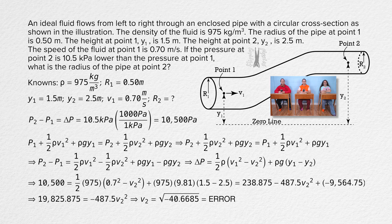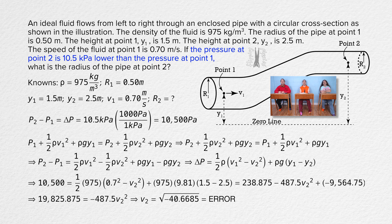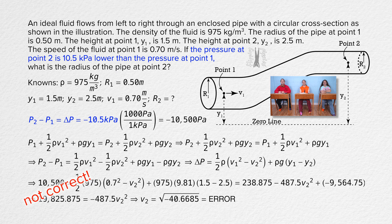Yeah, error. Why does it equal error? Because you cannot take the square root of a negative number. Oh. Do we just take the negative out of the equation and take the square root of 40.6685? No. Any time we are trying to take the square root of a negative number, it means we made a mistake. A lot of times it has to do with one of the known values having the incorrect sign. Yeah. The change in pressure. It says the pressure at point 2 is 10.5 kilopascals lower than the pressure at point 1. That means pressure at point 2 minus pressure at point 1 is a negative number. Yeah. The change in pressure equals negative 10.5 kilopascals.